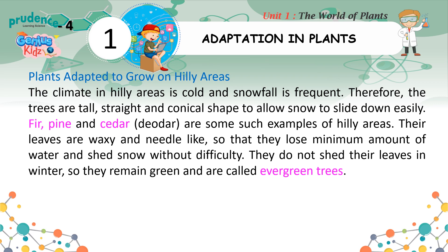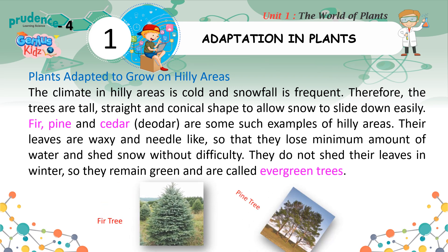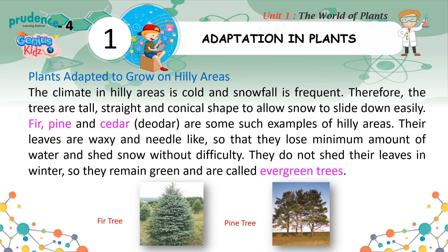Plants adapted to grow in hilly areas: The climate in hilly areas is cold and snowfall is frequent. Therefore, the trees are tall, straight, and conical shaped to allow snow to slide down easily. Fir, pine, cedar, and deodar are some such examples. Their leaves are waxy and needle-like, so that they lose minimum amount of water and shed snow without difficulty. They do not shed their leaves in winter, so they remain green and are called evergreen trees.